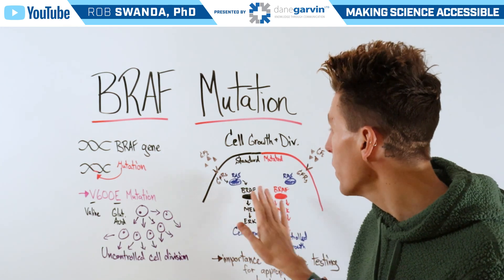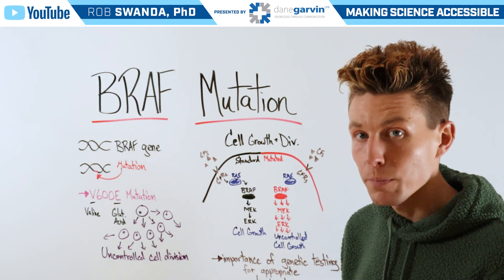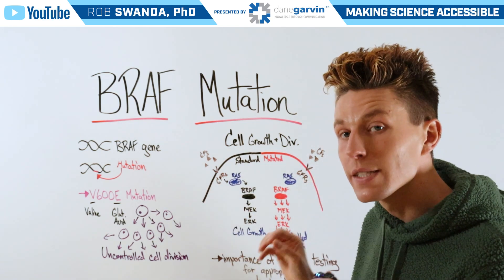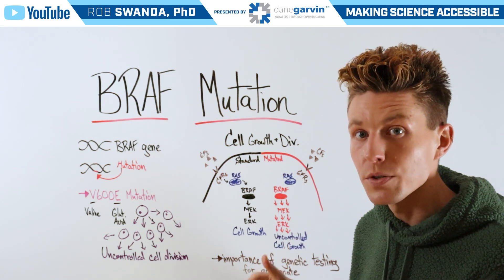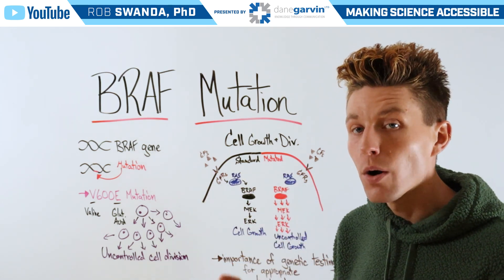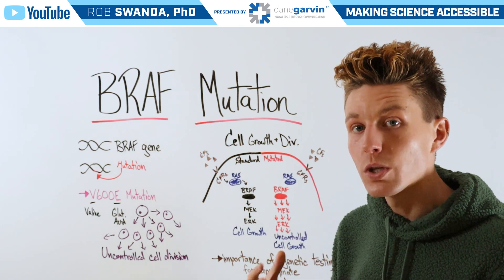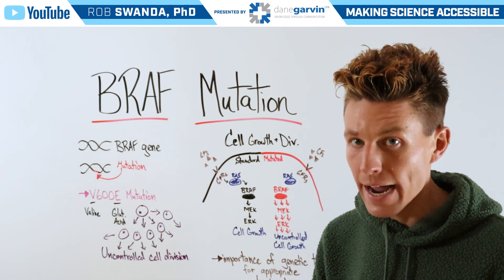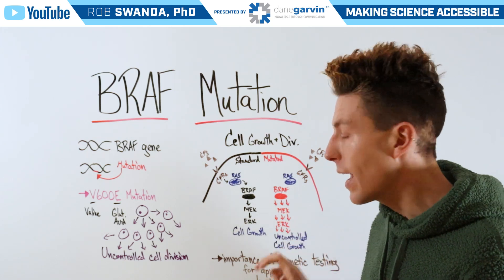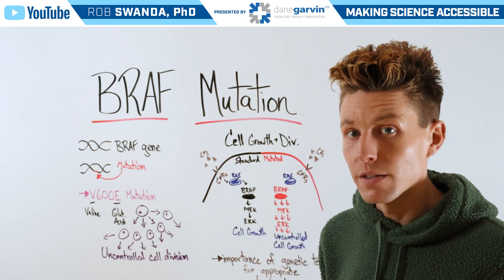However, with a mutated BRAF gene or BRAF protein, upstream growth factors still interact with growth factor receptors and send that signal to RAS. But now, RAS interacts with a mutated BRAF, which is sending extra signals downstream. So more signals are going to MEK and to ERK, leading to uncontrolled cell division.